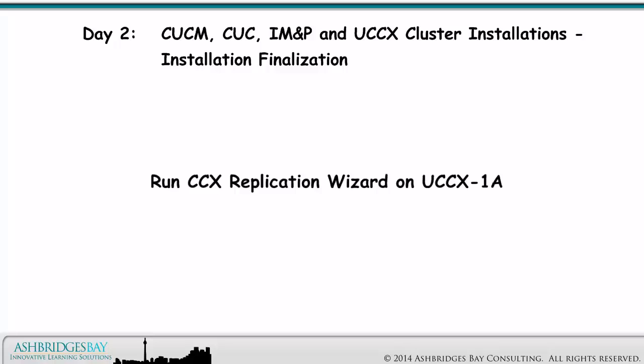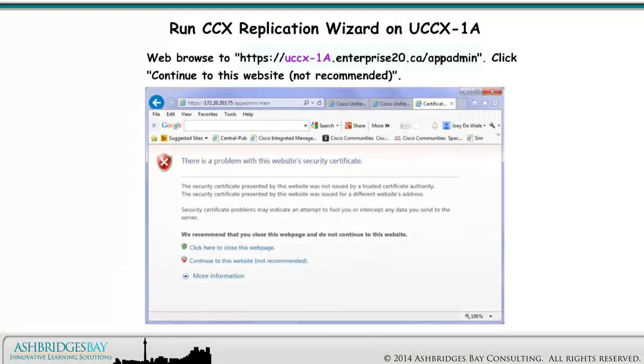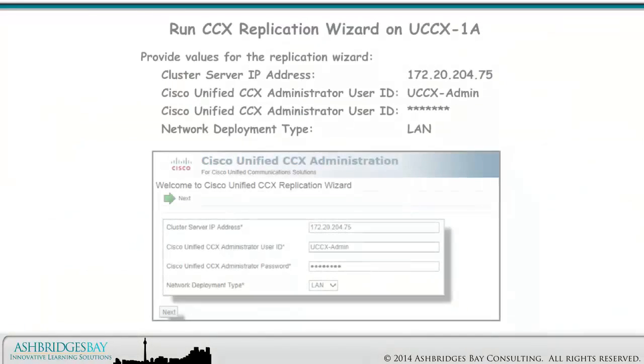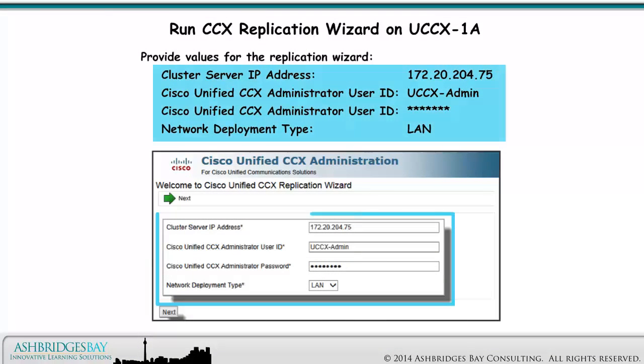We finish with UCCX 1A by running the CCX replication wizard on UCCX 1A. Web browse to this address. Click Continue to this website. Log in using Collab Admin and your password.